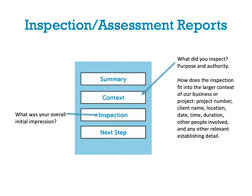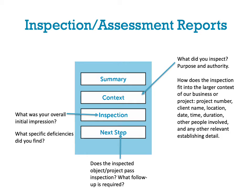What was your overall initial impression? Did you find any deficiencies? For the next step: does the inspected object or project pass inspection, and what kind of follow-up is required? Then go back to your summary — what did you inspect and for what purpose? Once you have all the other information, it will be easier to write the summary and give that brief overview.